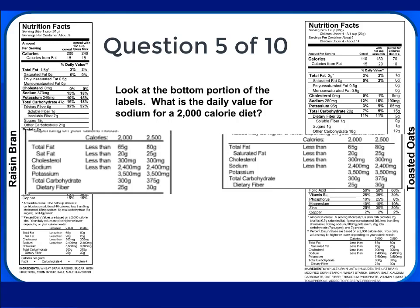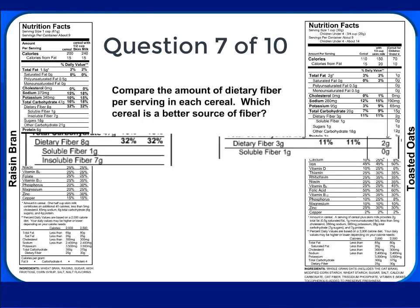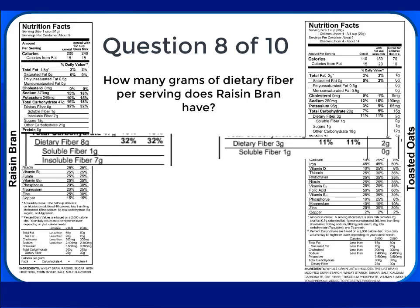What is the daily value for sodium for a 2,000 calorie diet? The correct answer is less than 2,400 milligrams. One serving of Raisin Bran with skim milk provides what percentage of the daily value for sodium? The correct answer is 18%. Compare the amount of dietary fiber per serving in each cereal. Which cereal is a better source of fiber? The correct answer is Raisin Bran. How many grams of dietary fiber per serving does Raisin Bran have? The correct answer is 8 grams.